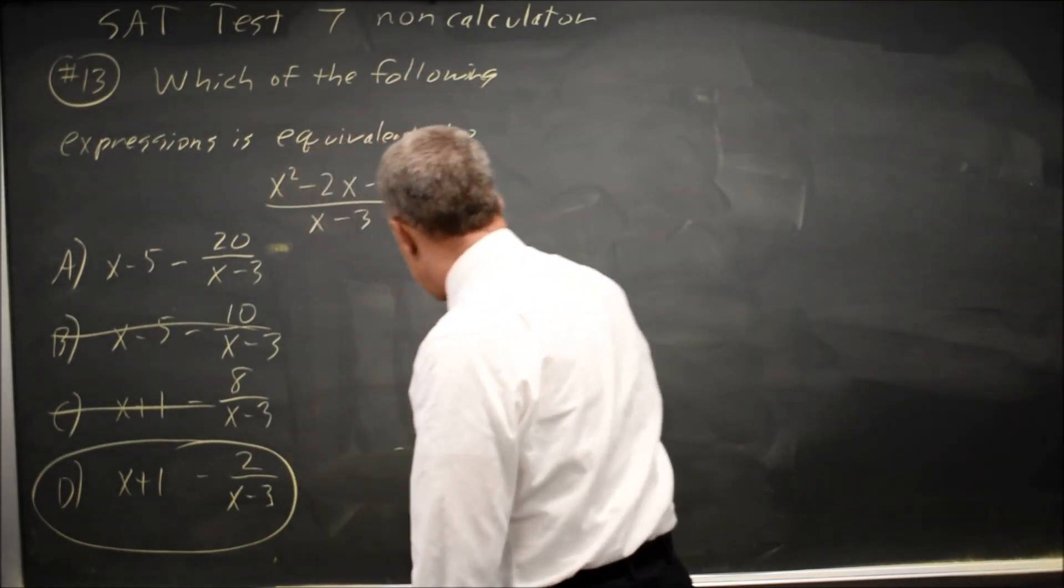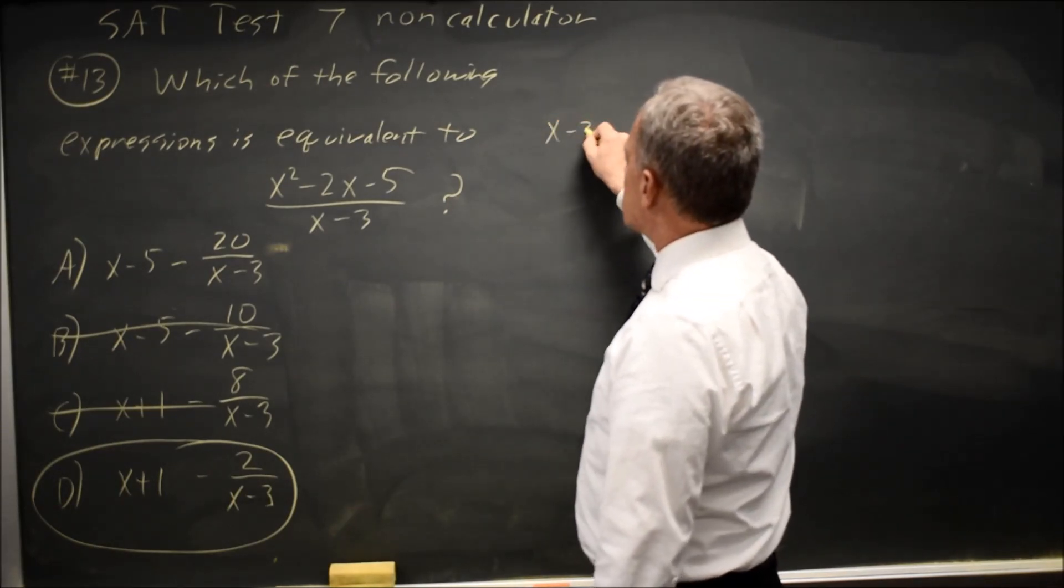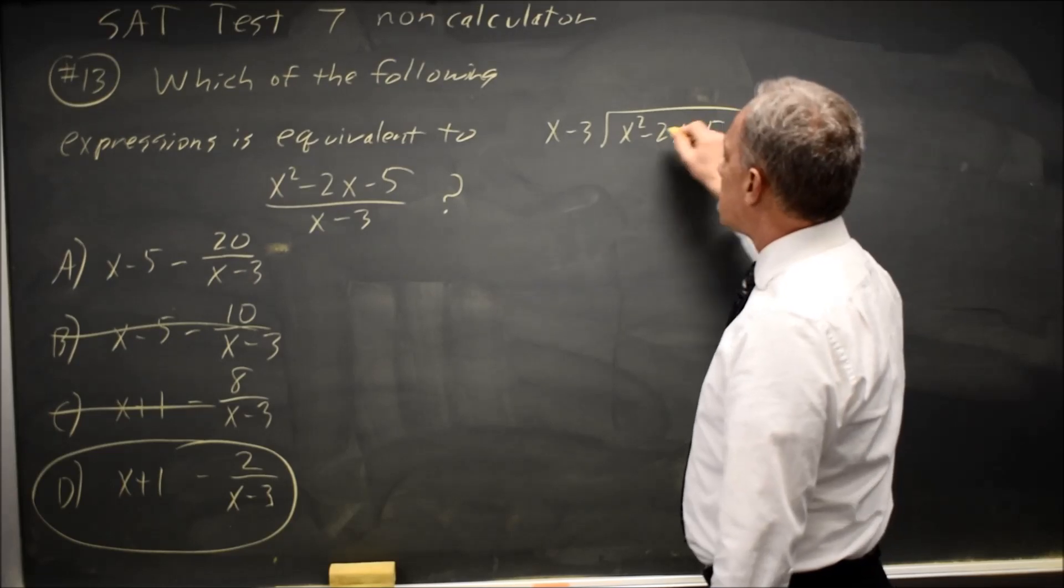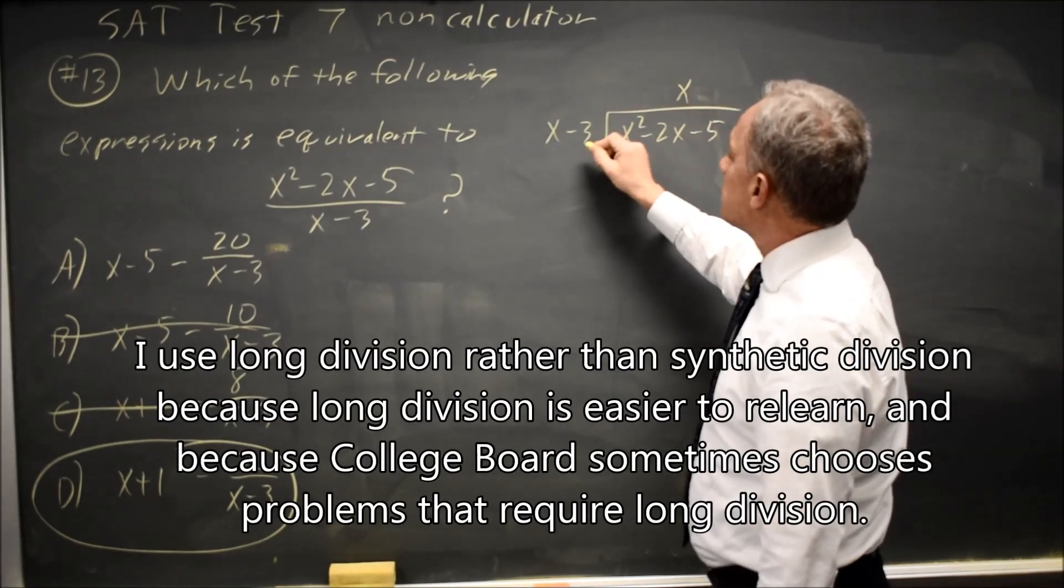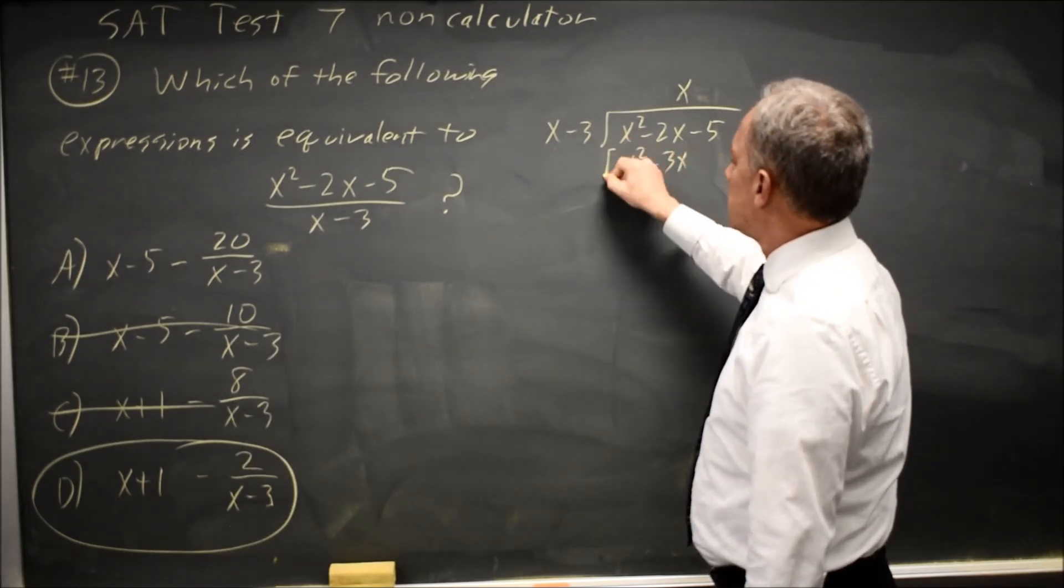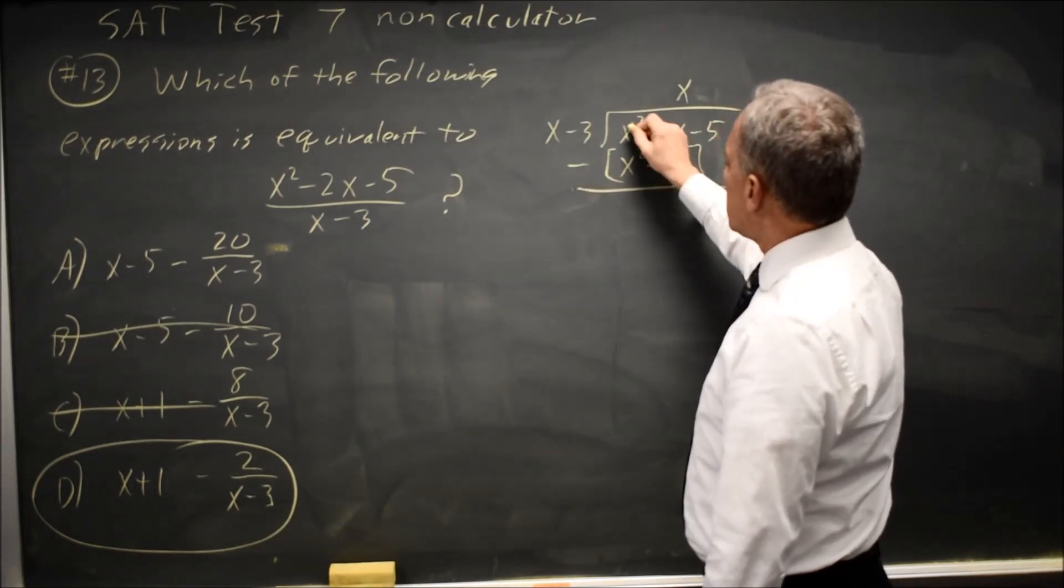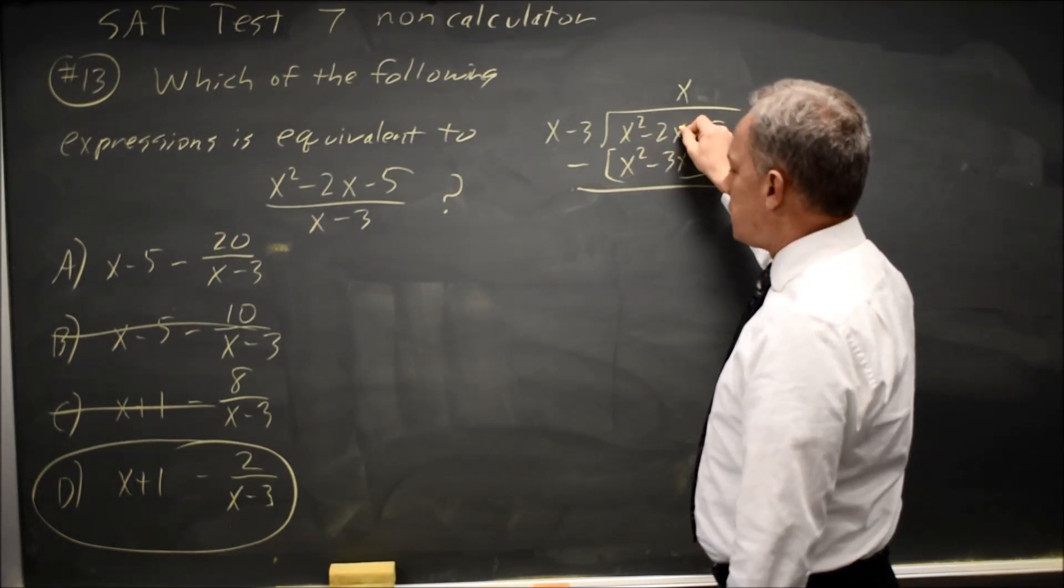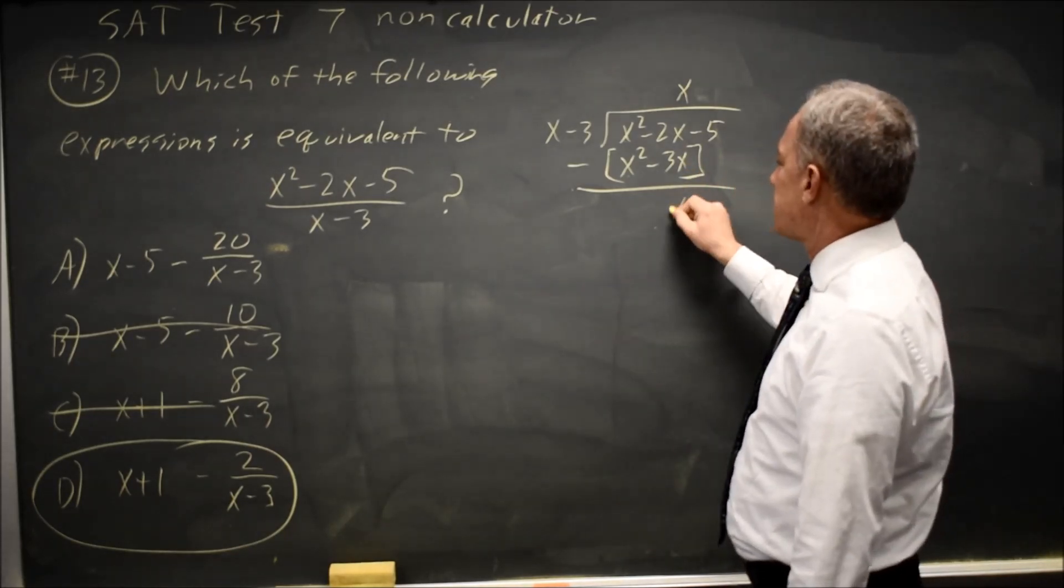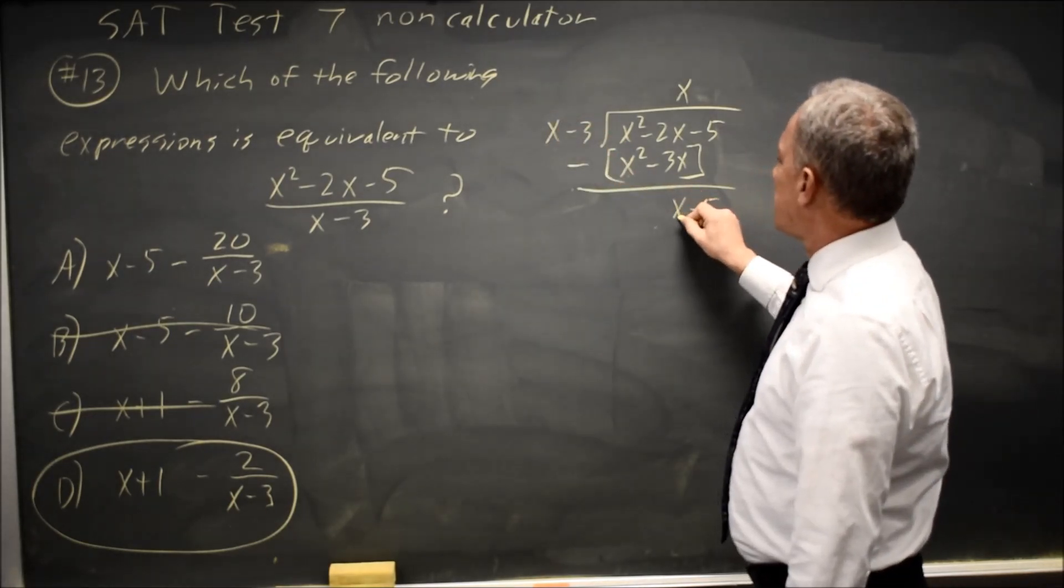Let's try this using algebra. x minus 3 into x squared minus 2x minus 5. x goes into x squared x times. x times x minus 3 is x squared minus 3x. I'm going to subtract this entire expression. x squared minus x squared is 0. Negative 2x minus negative 3x is negative 2x plus 3x is x.